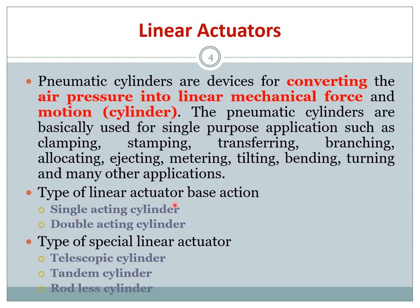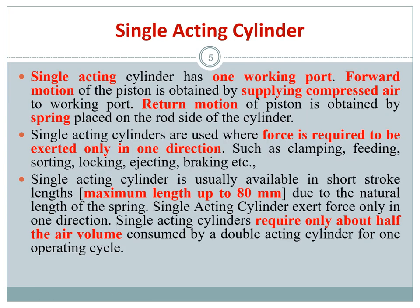Based on action, there are two types of linear actuator: the single acting cylinder and the double acting cylinder. There are also special linear actuators for special applications — the telescopic cylinder, tandem cylinder, and rodless cylinder.